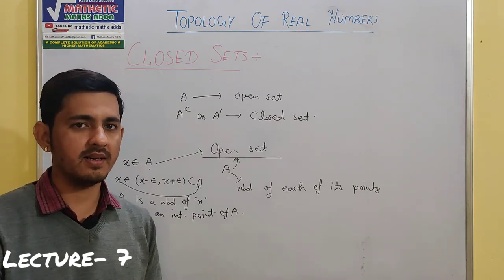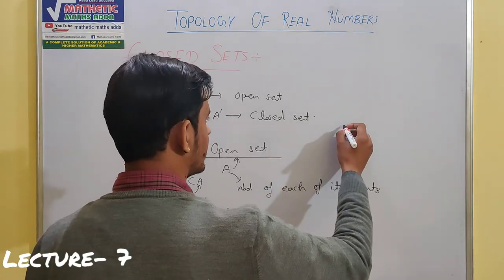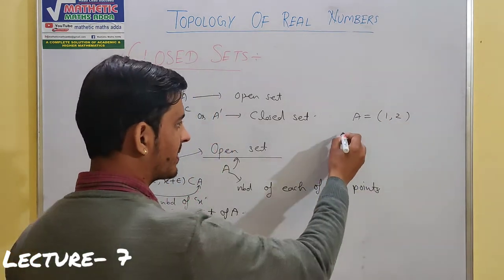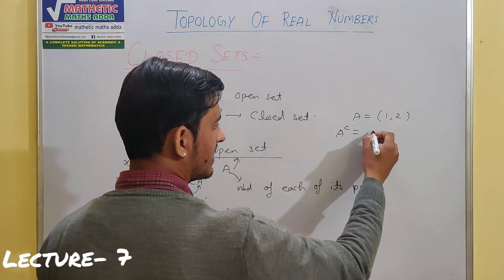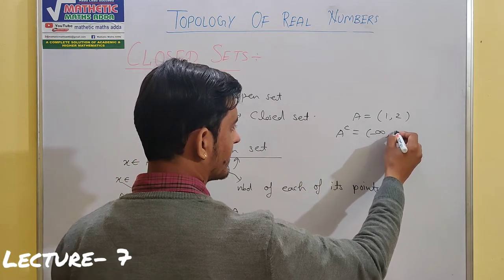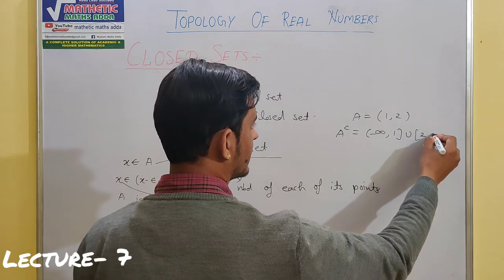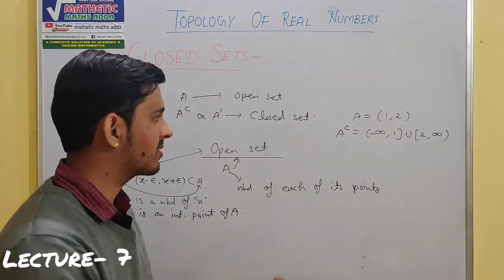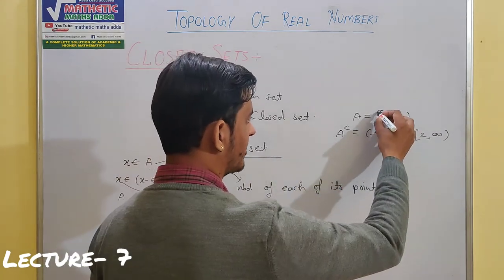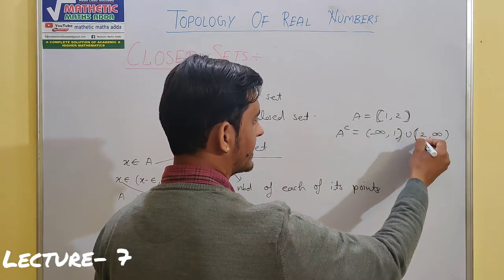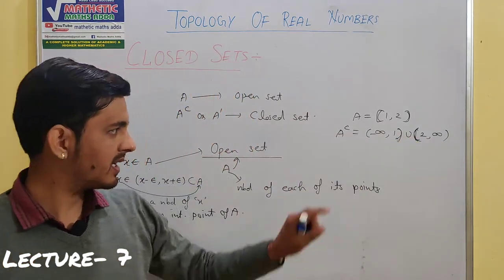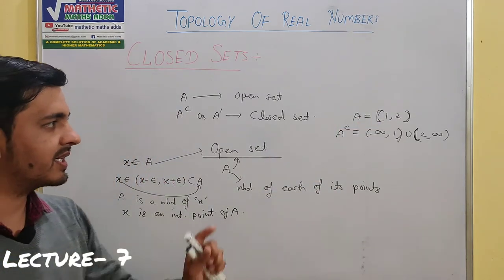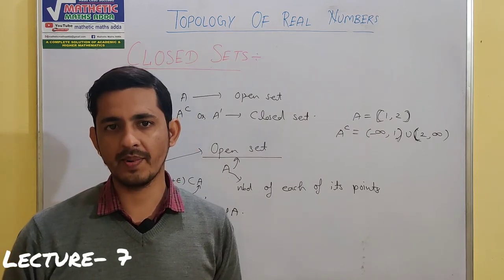For example, take the interval A = (1, 2). Its complement will be (−∞, 1] ∪ [2, ∞). This complement is not an Open Set — it's Closed. But if we take A as a Closed interval, then its complement comes out as Open. So if the complement of any set is Open, then that set becomes Closed.